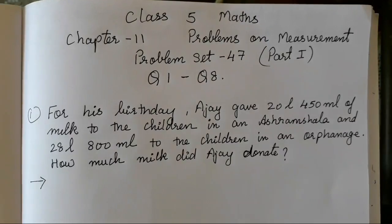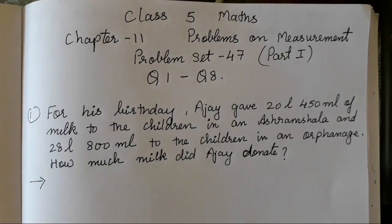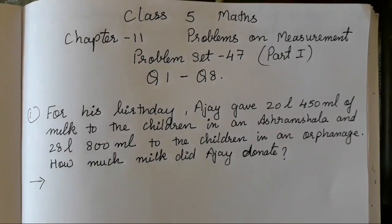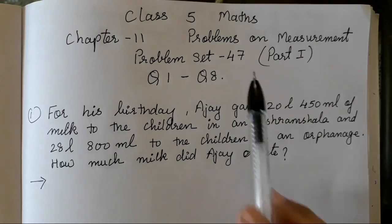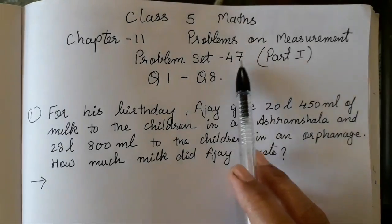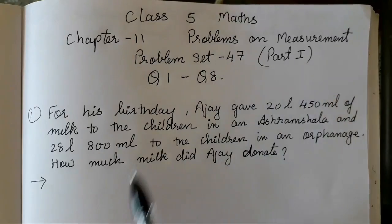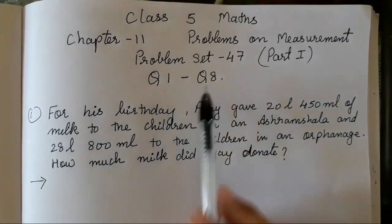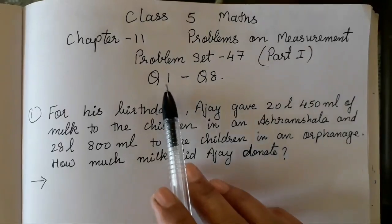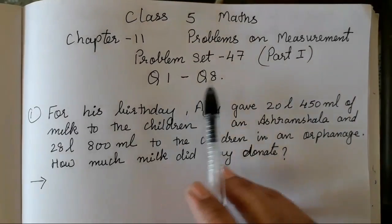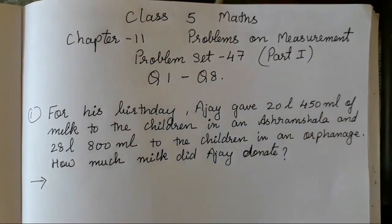Hello everyone, today we are going to do Class 5 Maths, Chapter 11, Problems on Measurement, Problem Set number 47, Part 1. We have divided this chapter into Part 1, Part 2, and Part 3 because the questions are quite lengthy — 21 questions are there. In today's video we are going to cover question 1 to question 8.